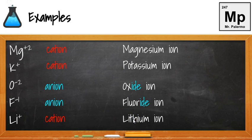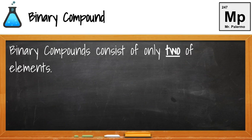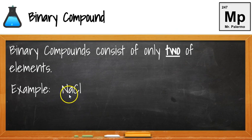A binary compound is when we have only two elements put together in a compound. We're going to learn how to name ones that have more than two in a later lesson. For example, NaCl has two elements, Na and Cl, so that's a binary compound.